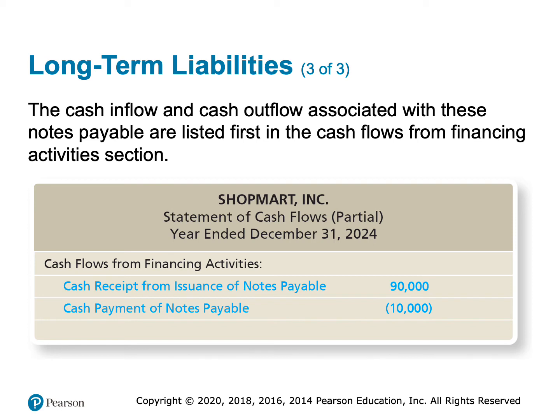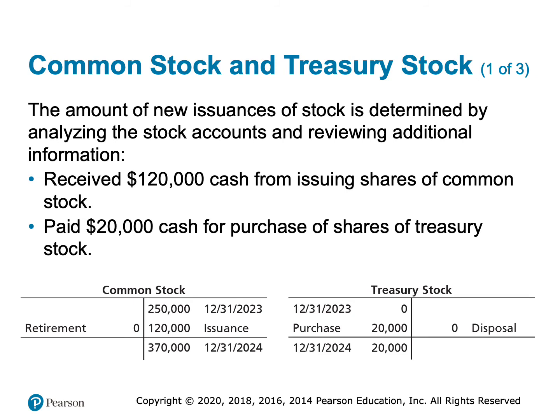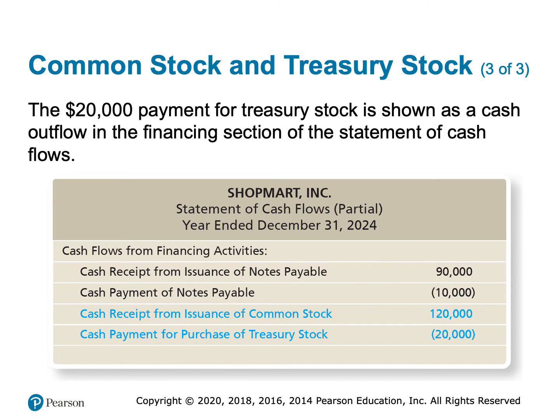Issuing notes means cash came in — we debited cash and credited notes payable — so that's a positive $90,000. We paid cash to retire notes, so that's a negative $10,000. We also issued common stock of $120,000, meaning we received $120,000 cash — a positive $120,000. And we paid $20,000 to purchase treasury stock, so that's a negative $20,000.